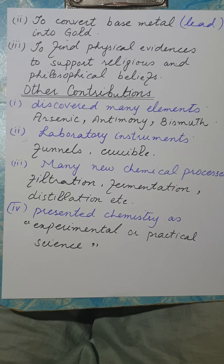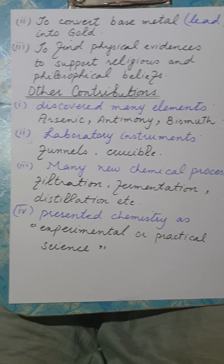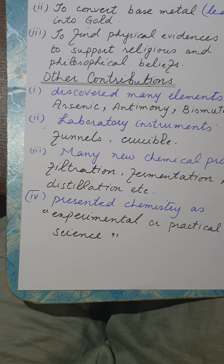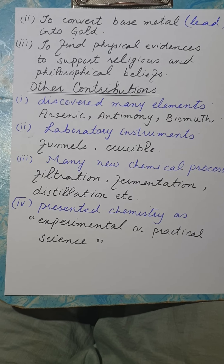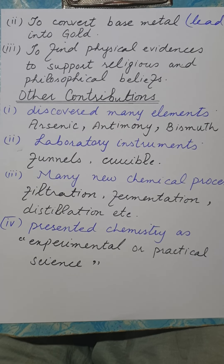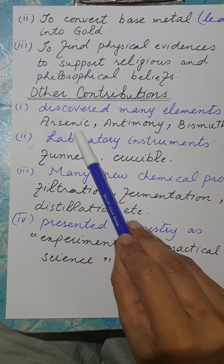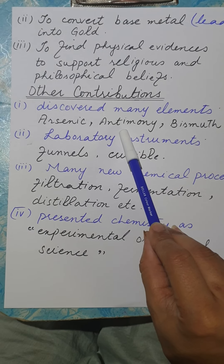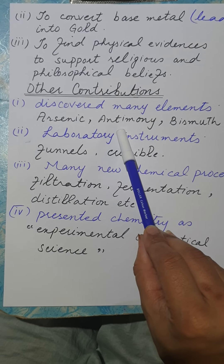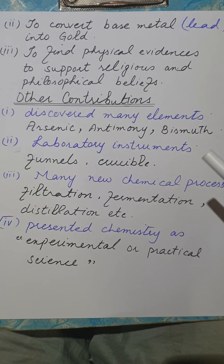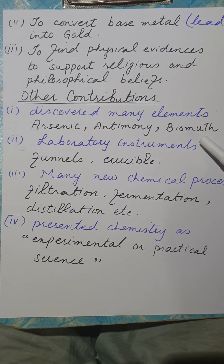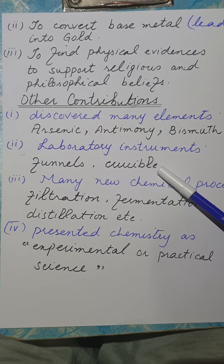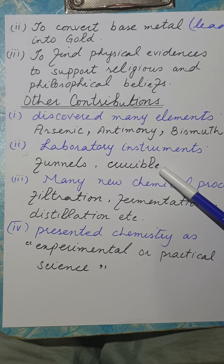The most important contributions of Muslim scientists include the discovery of many elements. Among these elements are arsenic, antimony, and bismuth — these are the metals which were discovered by Muslim scientists. After that, Muslim scientists also made many laboratory instruments.